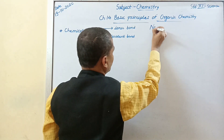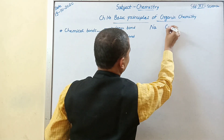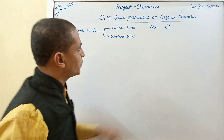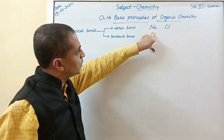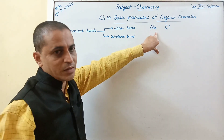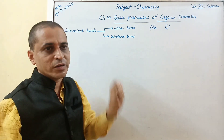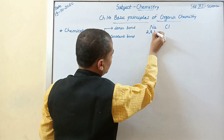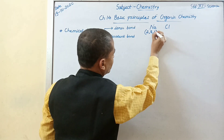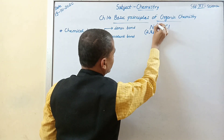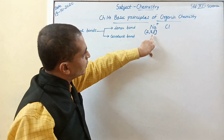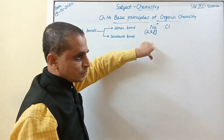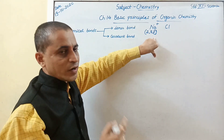You know that ionic bond is formed between metals and non-metals. Sodium is a metal and chlorine is a non-metal. Every atom tries to become stable by acquiring the electronic configuration of an inert gas element. The atomic number of sodium is eleven, written as 2, 8, 1. If it loses this electron, then it acquires positive charge. If any metal loses 1 electron, it acquires positive charge. If any atom loses 2 electrons, it acquires plus 2 charge.